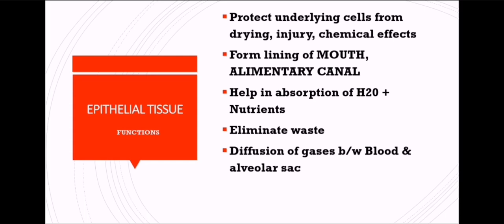HCl is acidic in nature, and if produced in higher amounts it is dangerous to the stomach wall. The epithelial tissue protects the lining of the alimentary canal from that harsh HCl. Epithelial tissue also forms the lining of the mouth and alimentary canal, helps in the absorption of water and nutrients, eliminates water, and enables diffusion of oxygen and carbon dioxide between blood and the alveolar sac. This gas diffusion mostly happens in the lung membrane — the alveolar membrane.